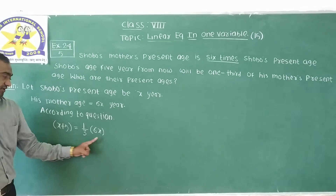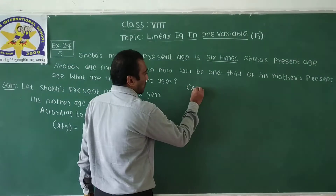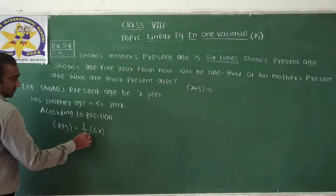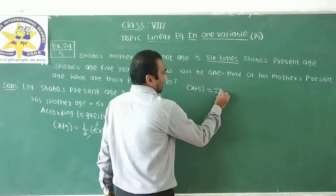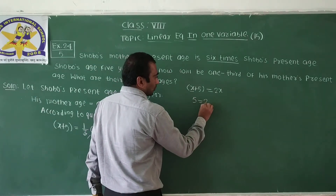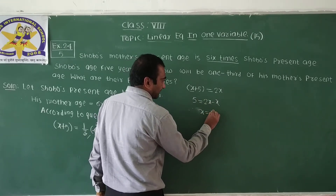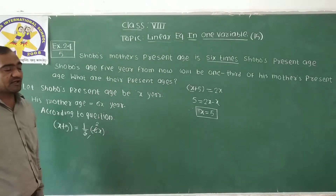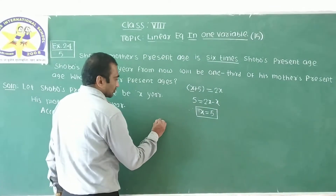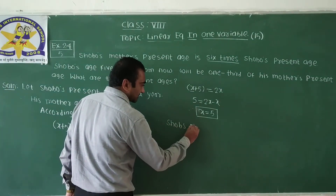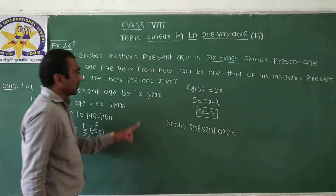Setting up the equation: x plus 5 equals one third of 6x, which gives x plus 5 equals 2x. Transferring x to the other side: 2x minus x equals 5, therefore x equals 5. Here we get the value of x. Therefore Shavod's present age is equal to x years.